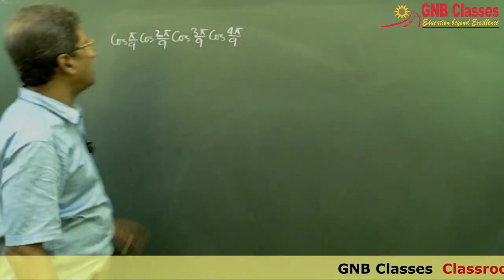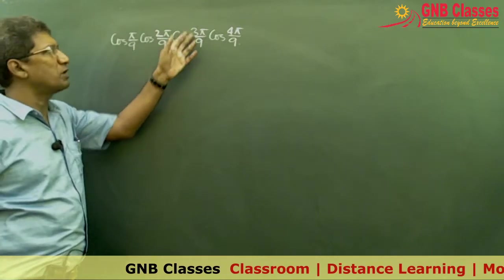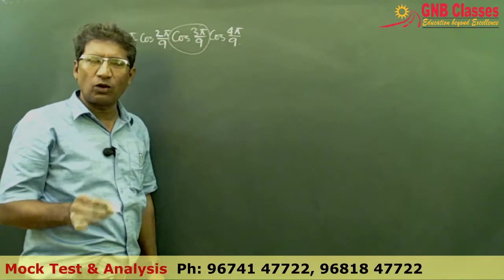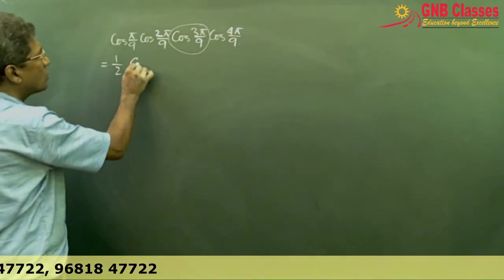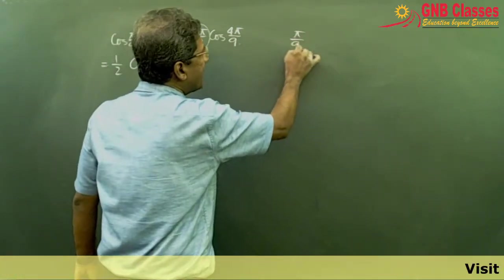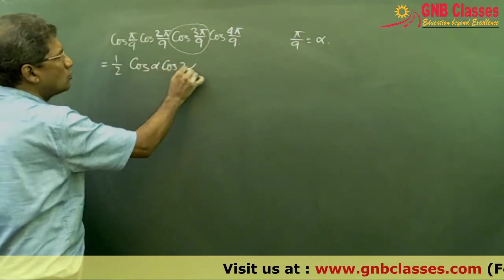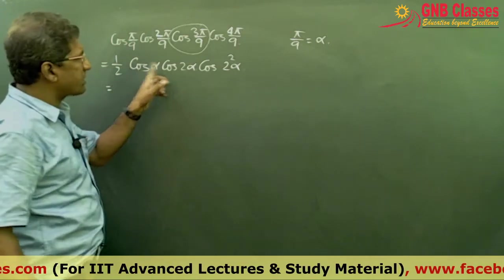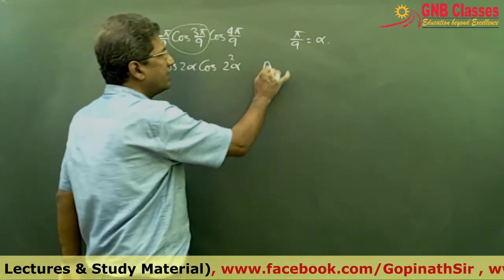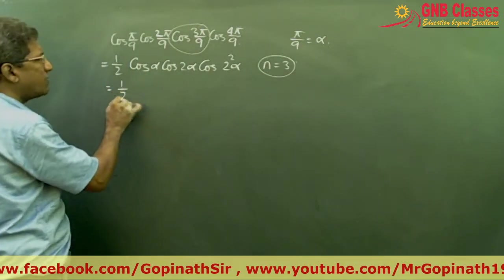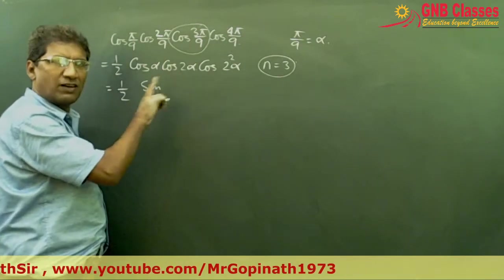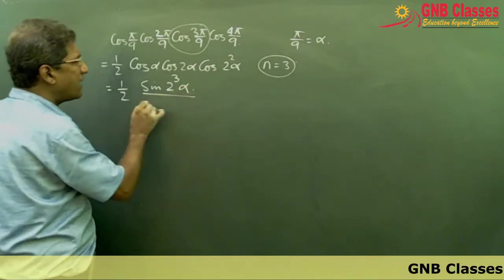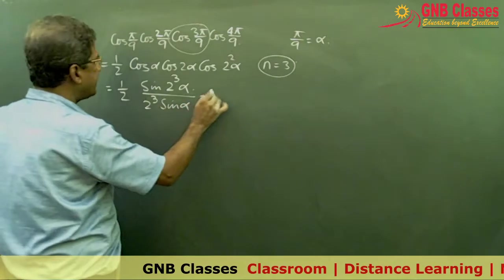To illustrate this result, I take the example: cos(π/9) · cos(2π/9) · cos(3π/9) · cos(4π/9). Now cos(3π/9) = cos(π/3) = 1/2, so I take 1/2 outside. Let α = π/9. We are left with cos α · cos 2α · cos 4α = cos α · cos 2α · cos 2²α. There are three terms, so n = 3. Applying the formula: sin(2^n α) / (2^n sin α).